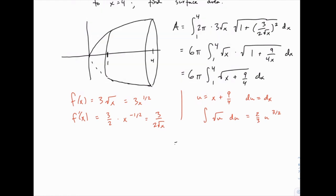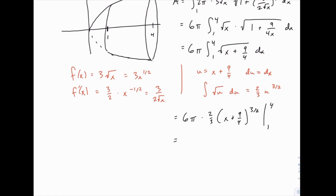So in this case, we get 6π times 2/3, x plus 9 over 4 to the 3/2, from 1 to 4. And then we can plug in those limits of integration and simplify a little bit. 6π times 2/3 is 4π.